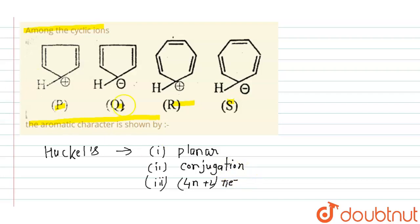Now 3 to 7 member rings are planar. So P, Q, R, S all are planar - this is a 5 member ring, this is a 5 member ring, this is a 7 member ring, and this is also a 7 member ring. So all are planar.